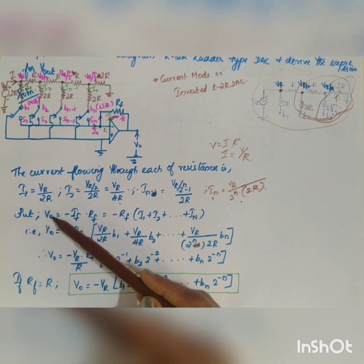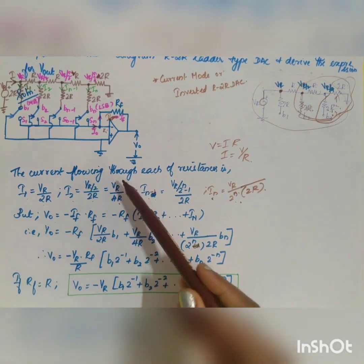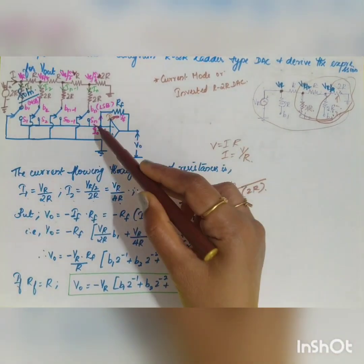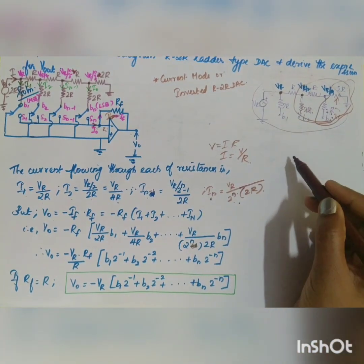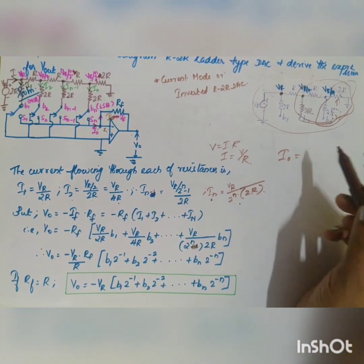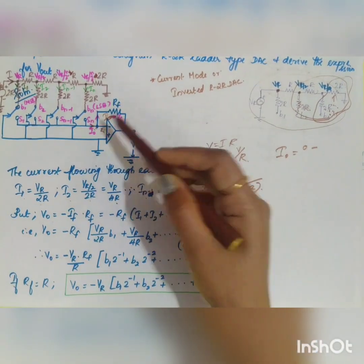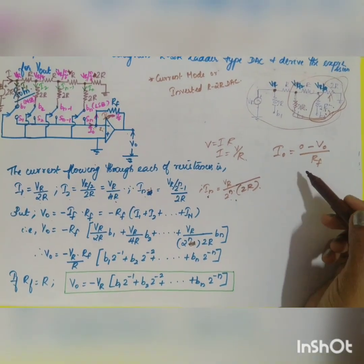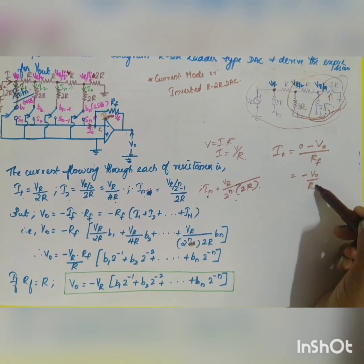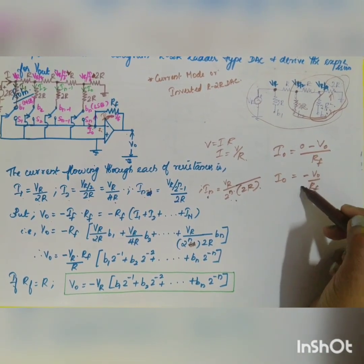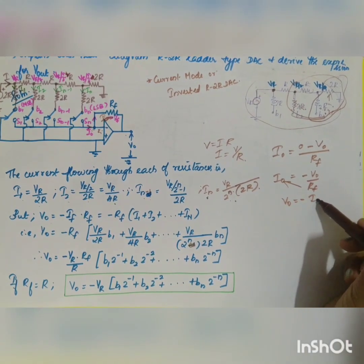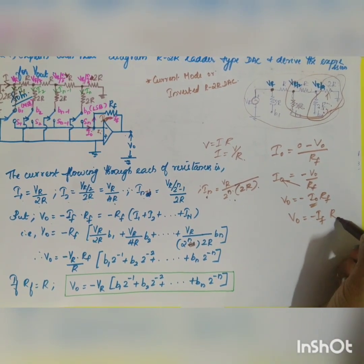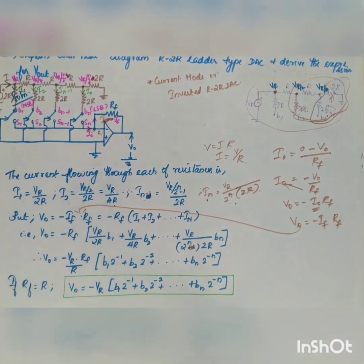The aim is to find the output voltage. Since I0 = IF, the output current is the potential difference divided by RF. So I0 = (0 − V0)/RF = −V0/RF. Therefore, V0 = −I0 × RF. Since I0 = IF, V0 = −IF × RF.